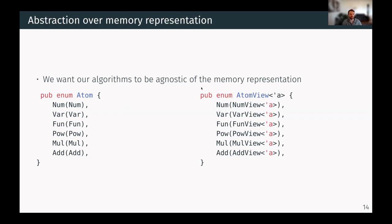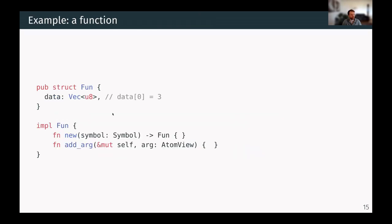So instead, we have two structures, the atom and the atom view, which are basically wrappers around the vector of u8. And we can still get the benefits from pattern matching again on these enums. So let's have a look what, for example, the function looks like. Function is just a vector of u8 where the first one is this 3 that I mentioned earlier. And it has functions like create a new one or add an argument where the argument is an atom view.